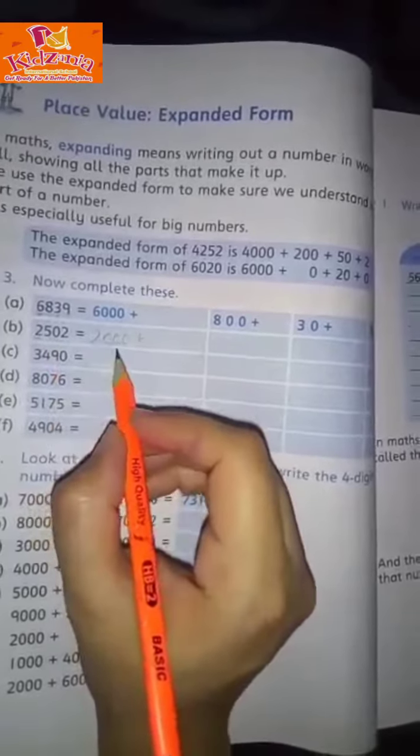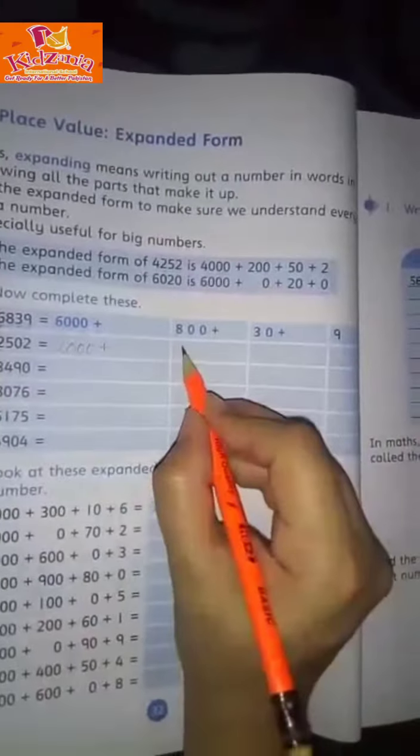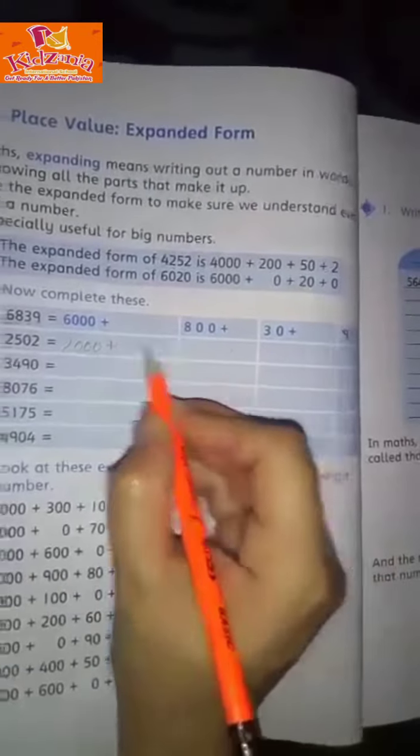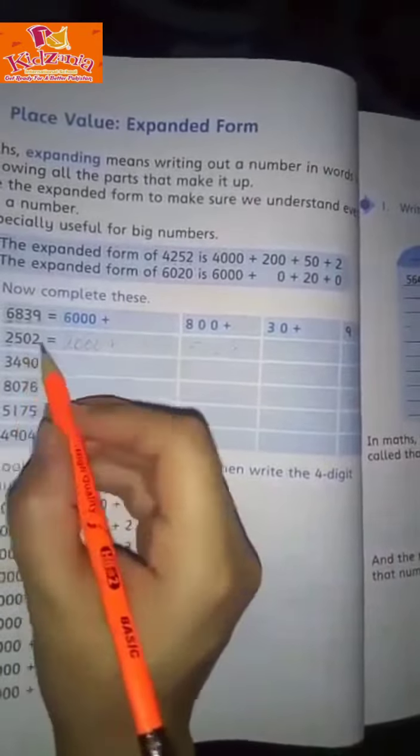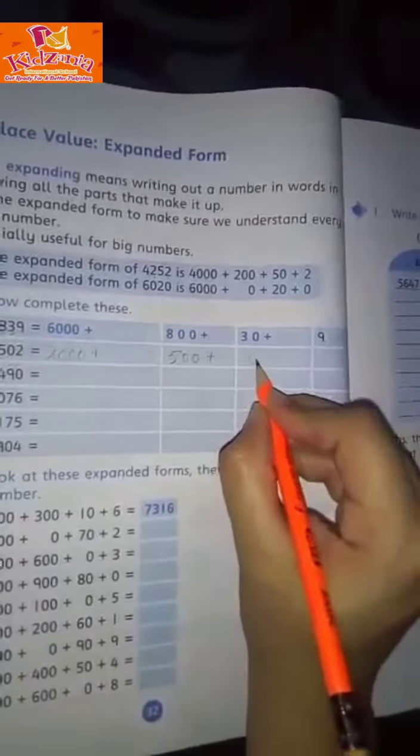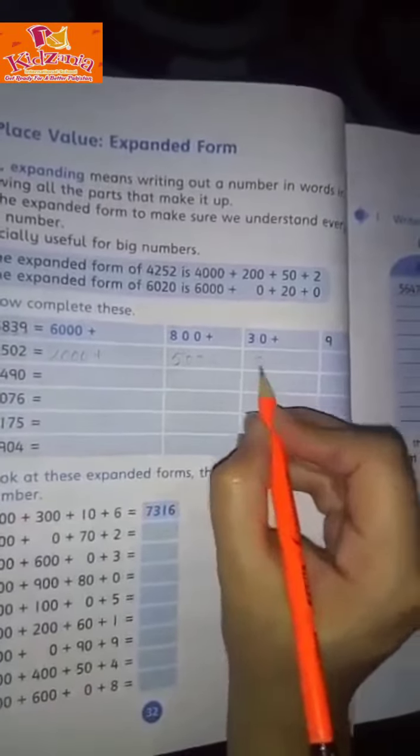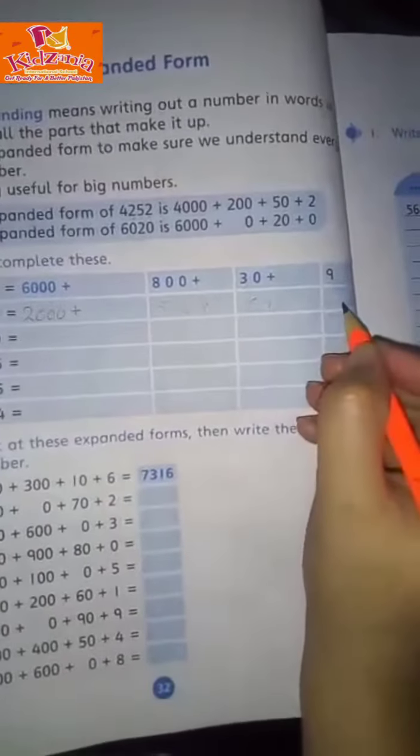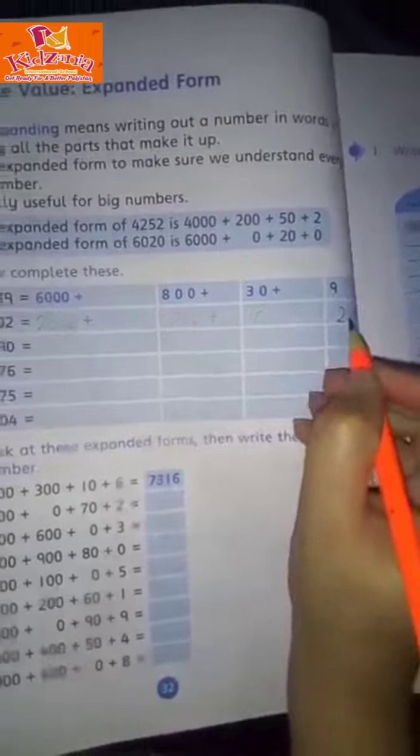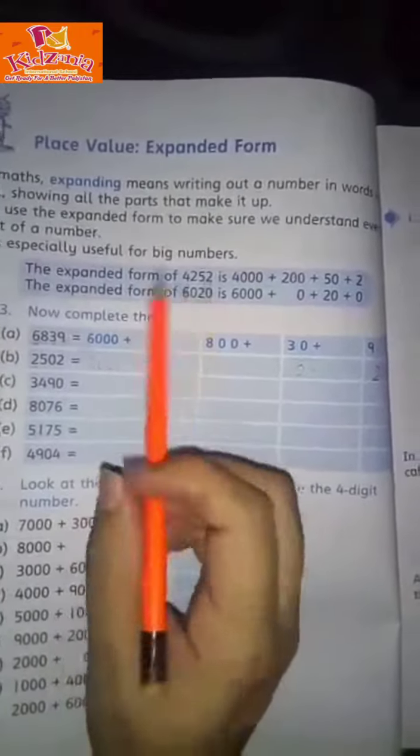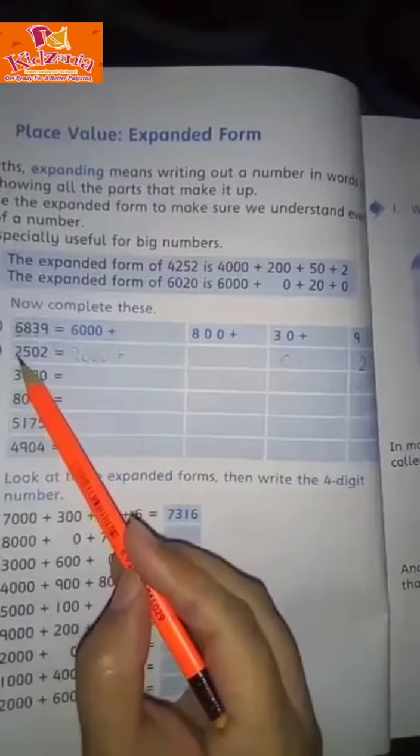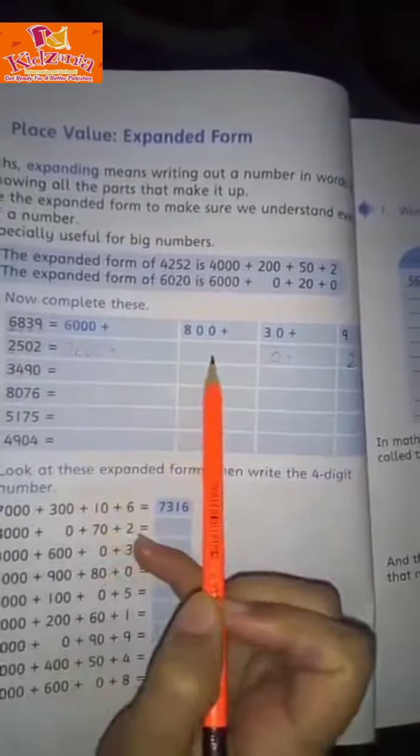0 is in the tens place, so we write 0 plus. 2 is in the ones place, so we write 2. This is called expanded form—to write each digit number in expanded form.